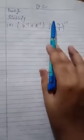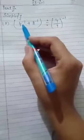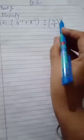This is part number 7 of exercise 2.1. Simplify the following exponential expression. First question: 4 raised to power minus 1 plus 8 raised to power minus 1, divided by 9 by 4 raised to power minus 1.